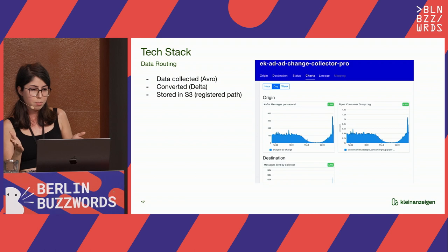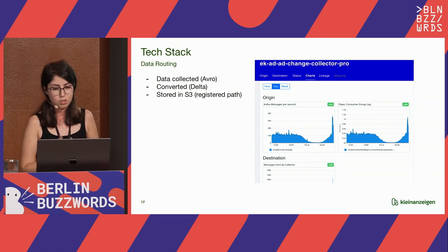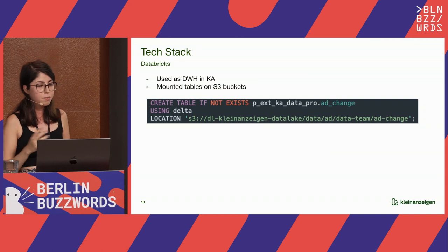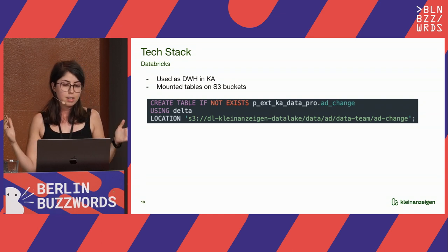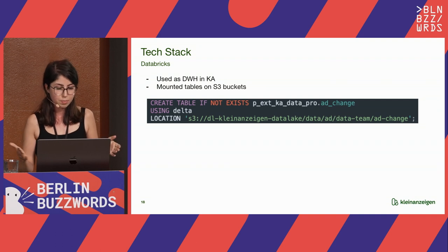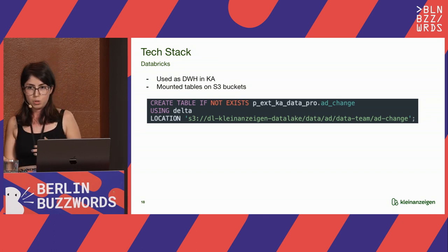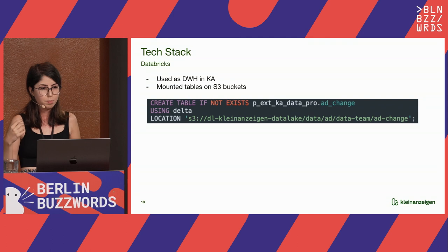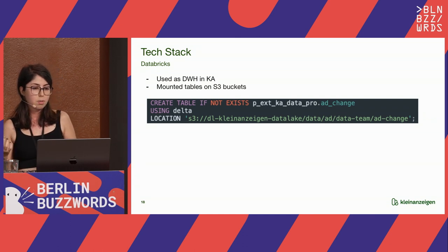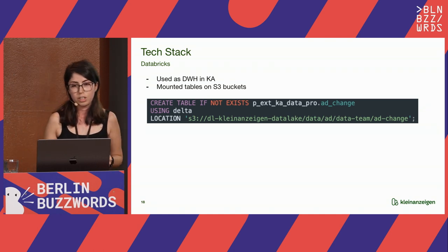This is also a screenshot from Data Hub where we created the pipeline and can see if the messages are coming. After having the ingestion layer, we need to create tables in the data warehouse system — in our case, Databricks. It is used as a data warehouse in Kleinanzeigen, and we use S3 for the data lake — we are not using the Databricks file system. We are entirely dependent on S3 buckets, so we mount the tables on S3 buckets with a script, indicating the format of the data and the S3 location.